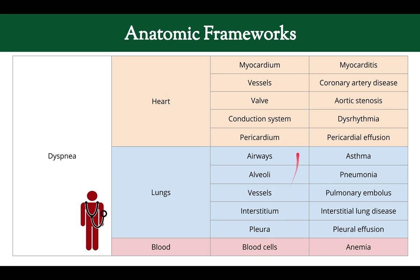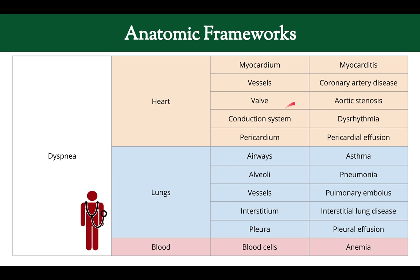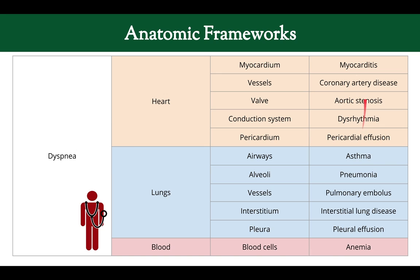What's in the chest? There's the heart, the lungs, and the blood. For the myocardium, you could have myocarditis; for the vessels, coronary artery disease; valvular diseases like aortic stenosis; problems with the conduction system and pericardium. The blood has blood cells — that could be the problem. You could have problems with each of the different anatomical components in the chest that could cause dyspnea. This is yet another way to create a differential diagnosis.